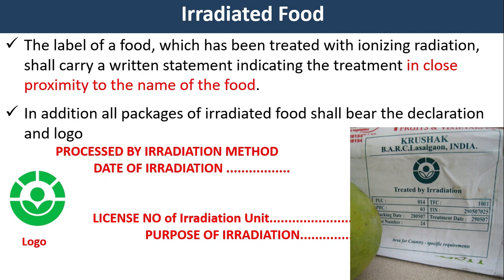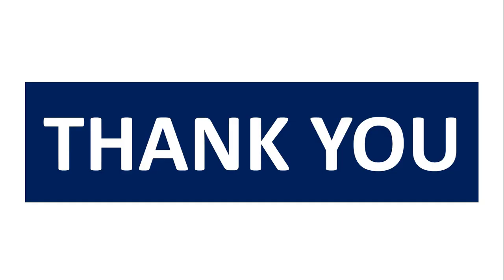Irradiated food: The label of a food which has been treated with ionizing radiation shall carry a written statement indicating the treatment in close proximity to the name of the food. In addition, all packages of irradiated food shall bear the declaration and logo 'Processed by irradiation method,' along with the date of irradiation, license of the irradiation unit, and purpose of irradiation. The logo should especially be included.